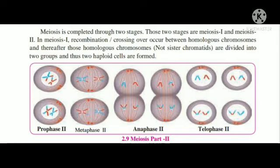Meiosis second is similar to the mitosis division. The two haploid cells produced in meiosis part one now undergo further division, forming four haploid cells.